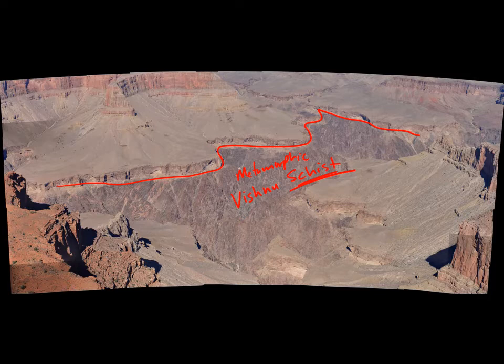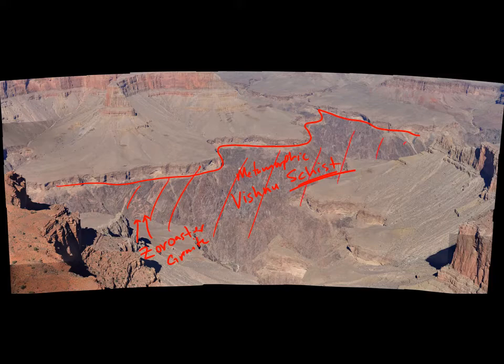Intruded and sort of included with that schist, this pinkish stuff here is an intruded igneous rock which has also been metamorphosed. It's very often lumped together and called the Zoroaster Granite. So granite is an igneous rock. The bulk of what we see down here is metamorphic — schist with some intrusions of granite too. Let's go take a look up close at its properties and then talk about how this stuff formed.